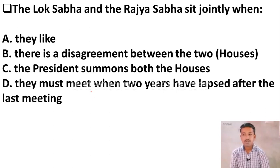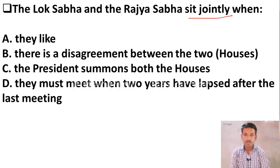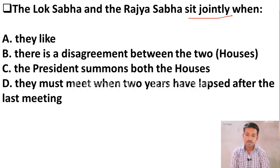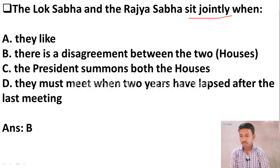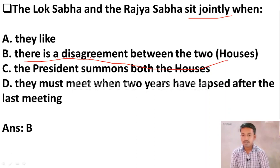Next question: The Lok Sabha and the Rajya Sabha sit jointly when — Option A: they like. Option B: there is disagreement between the two. Option C: the President summons both houses. Option D: when two years have lapsed after the last meeting. The right answer is Option B — the Lok Sabha and Rajya Sabha sit jointly when there is a disagreement between the two houses.